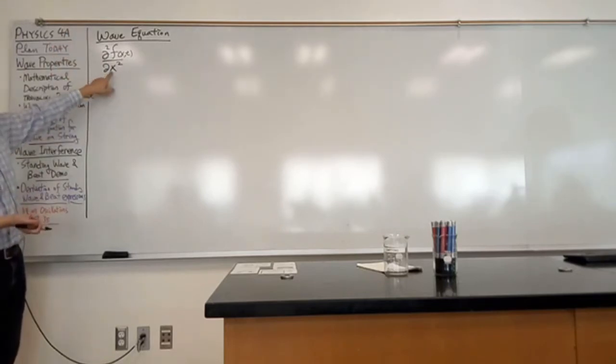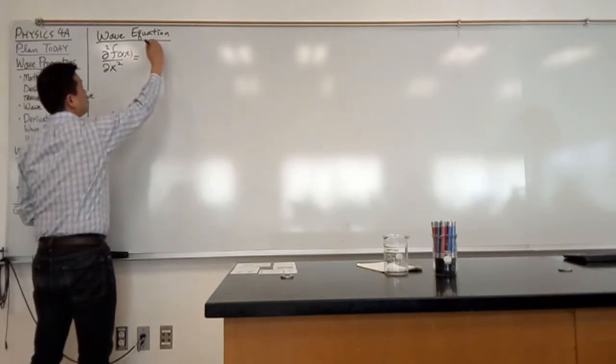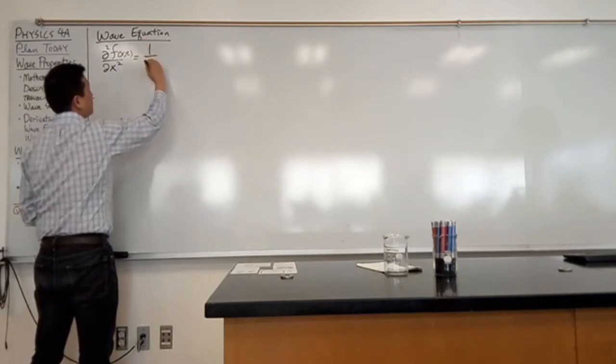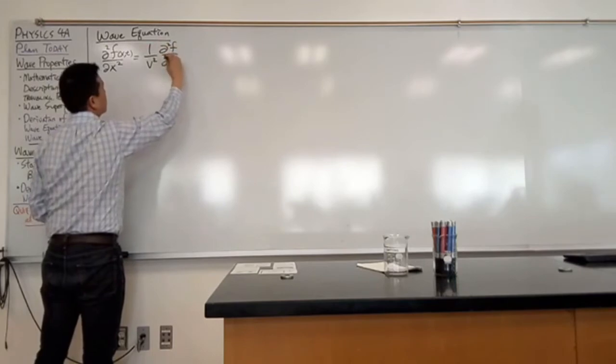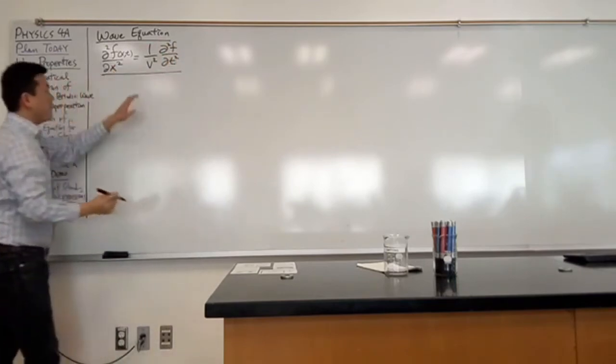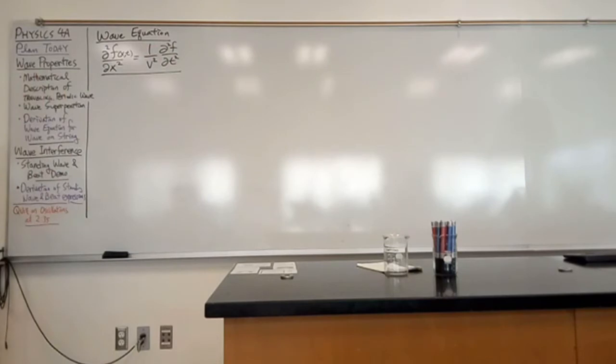It's just saying that we are taking derivative with respect to variable x alone. Everything else is constant. This is equal to 1 over v squared double partial derivative with respect to time. So this is the wave equation that we wrote down last time.